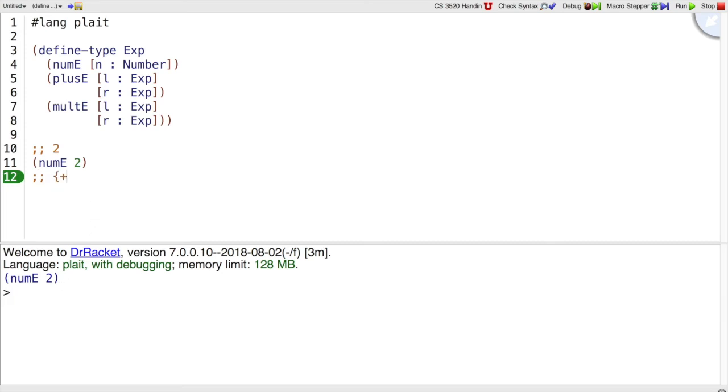And if we want to represent the CURLY program plus 1 2, then that would be plusE. And I can't put just 1 and 2 inside there, because 1 by itself is not an expression, that's just a number. I have to say numE of 1 and numE of 2 to make that a plus expression.